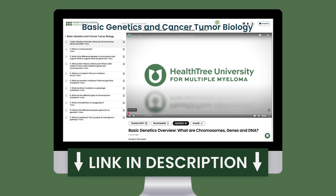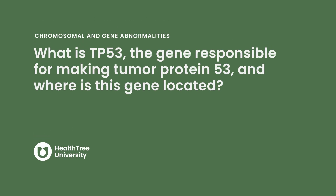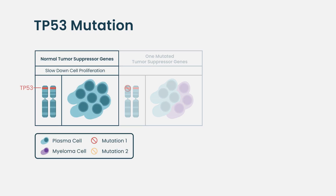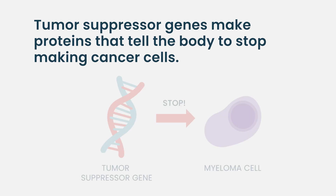If this sounds confusing, you can check out the HealthTree University basic genetics and tumor biology course for a deeper understanding. What is TP53? It's the gene responsible for making tumor protein 53. P53 is a tumor suppressor gene, so we are created with the ability to suppress cancer and malignant transformation. When P53 is mutated, cancer often develops and is typically associated with a more aggressive course across the board — multiple myeloma, CLL, and other heme malignancies.